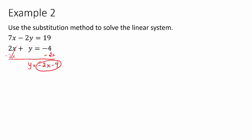Now we're at the same point as in the first example — we know what y equals and we plug it into the other equation. You always have to plug it into the other equation, not the one you just used, because plugging it back into the same equation will not give the correct answer. So in the equation 7x minus 2y equals 19, where y was, we substitute in negative 2x minus 4.